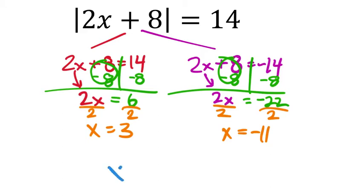Whether it's an assignment or a test, you want to list these in order from least to greatest. So negative 11 is less, and then 3 would be next. These two are the values of x that make that a true statement.